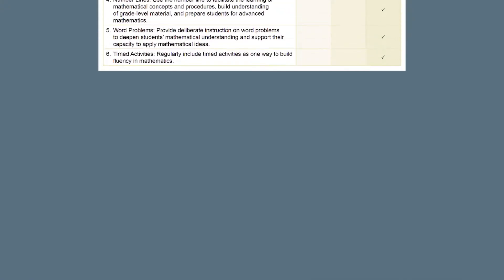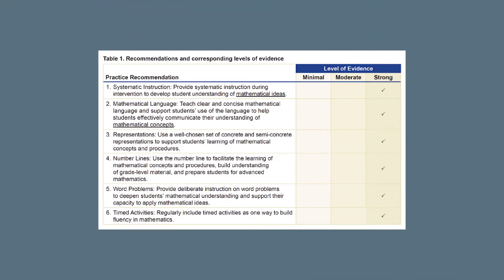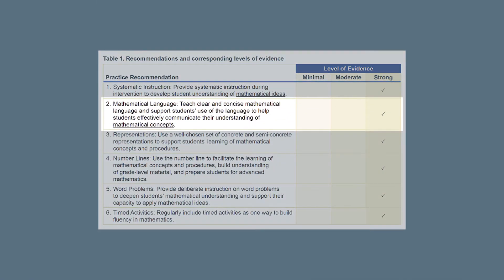Students in intervention settings will need multiple exposures to mathematical language to understand the terminology and begin to integrate it into classroom discussions. The What Works Clearinghouse and the expert panel assigned a strong level of evidence to this recommendation, meaning there is consistent evidence that meets not only the What Works Clearinghouse standards, but indicates that this practice improves outcomes for diverse student populations. When teachers use conversational or informal language instead of mathematical language, students can get confused.